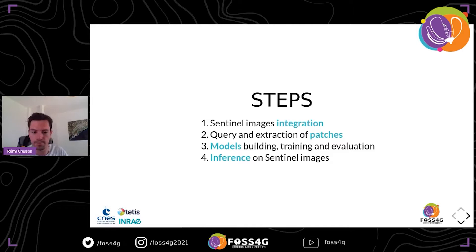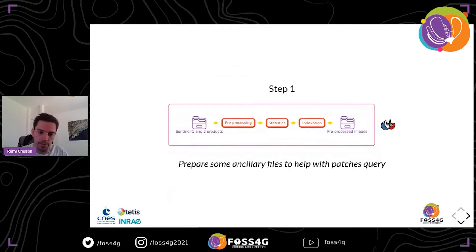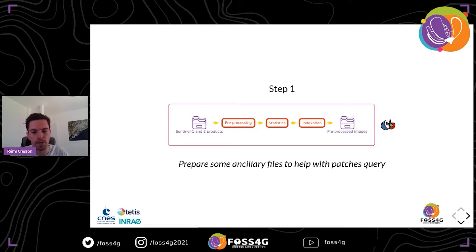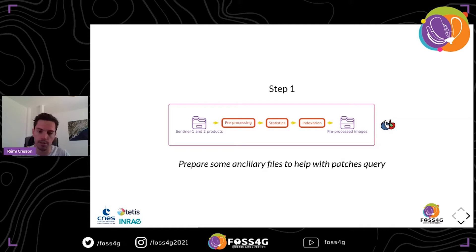The first step: you have Sentinel-1 and Sentinel-2 products, you pre-process the images — computing top-of-canopy reflectance for optical images and performing synthetic aperture radar calibration. These images are stored in tiled, lossless compressed format to speed up I/O. Then we compute statistics about cloud percentage in patches, no-data pixels, and so on. All patches are indexed, and we export everything to enable patch queries later.